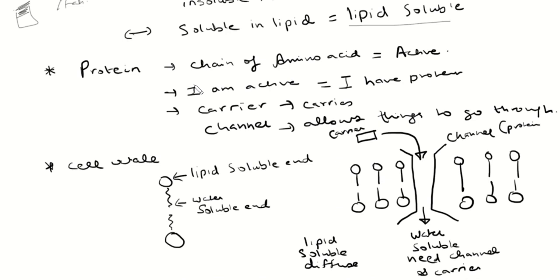We also talk about proteins, which are chains of amino acids. The way to think about proteins is they do some active stuff — they're active. The table I am working off of is not active; it doesn't have protein.